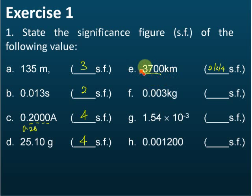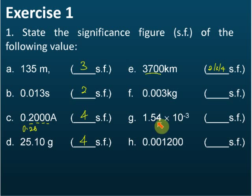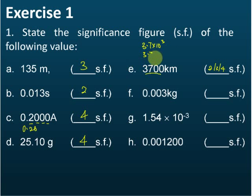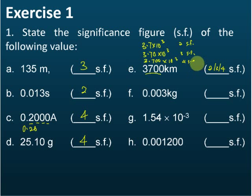This is not a good way to write or present your answer if you want to show the number of significant figures. So if you really want to show the number of significant figures, then you should use scientific notation. For example, if it's 2 significant figures, you should write 3.7 times 10 to the power of 3. If it's 3 significant figures: 3.70 times 10 to the power of 3. And if 4 significant figures: 3.700 times 10 to the power of 3.